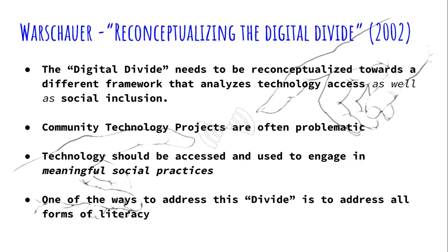Warshower brings up examples of community technology projects, such as the hole-in-the-wall project, noting they are often problematic because hardware is thrown at problems without proper implementation. He argues that technology should be accessed and used to engage in meaningful social practices — not just providing the technology, but using it to open up opportunities for social groups and get them more involved in the community to address social issues.